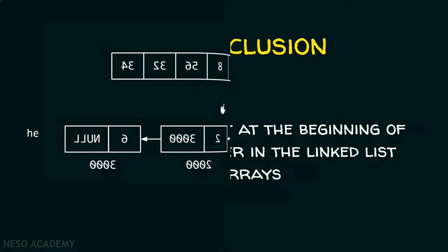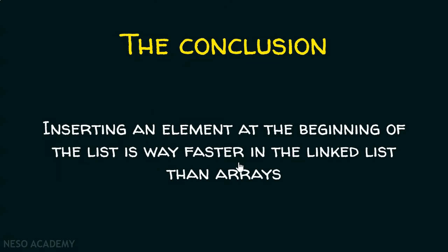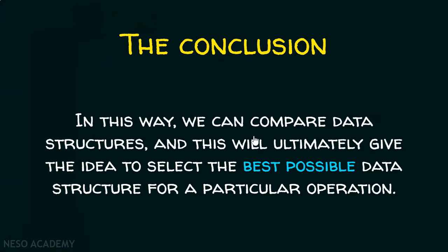So the conclusion is: inserting an element at the beginning of a list is far faster in a linked list than in an array. In this way, we can compare data structures, and this will ultimately give us the idea to select the best possible data structure for a particular operation. For the operation of adding data at the beginning of the list, it is clear that linked list performs better than array, so we will choose linked list.